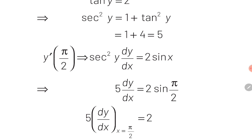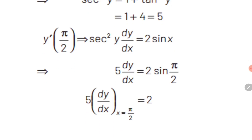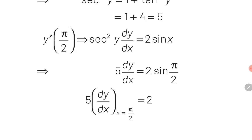To find y(π/2), substitute x = π/2: tan(y) = -2cos(π/2) + 2 = 2. Once we obtain tan(y) = 2, we find sec²(y) = 1 + tan²(y) = 1 + 4 = 5. Back substituting into the differential equation sec²(y)·(dy/dx) = 2sin(x) at x = π/2: 5·(dy/dx) = 2·sin(π/2) = 2·1 = 2. Therefore the final answer is 5·y'(π/2) = 2.